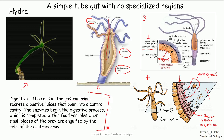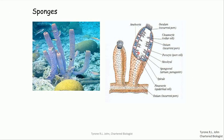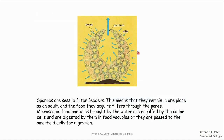You need to make a note of this passage, which gives the brief description of how food is digested in hydra. That's one example of a simple tube gut. Another example — not in the notes — is sponges, which also have simple tube guts with no specialized regions.